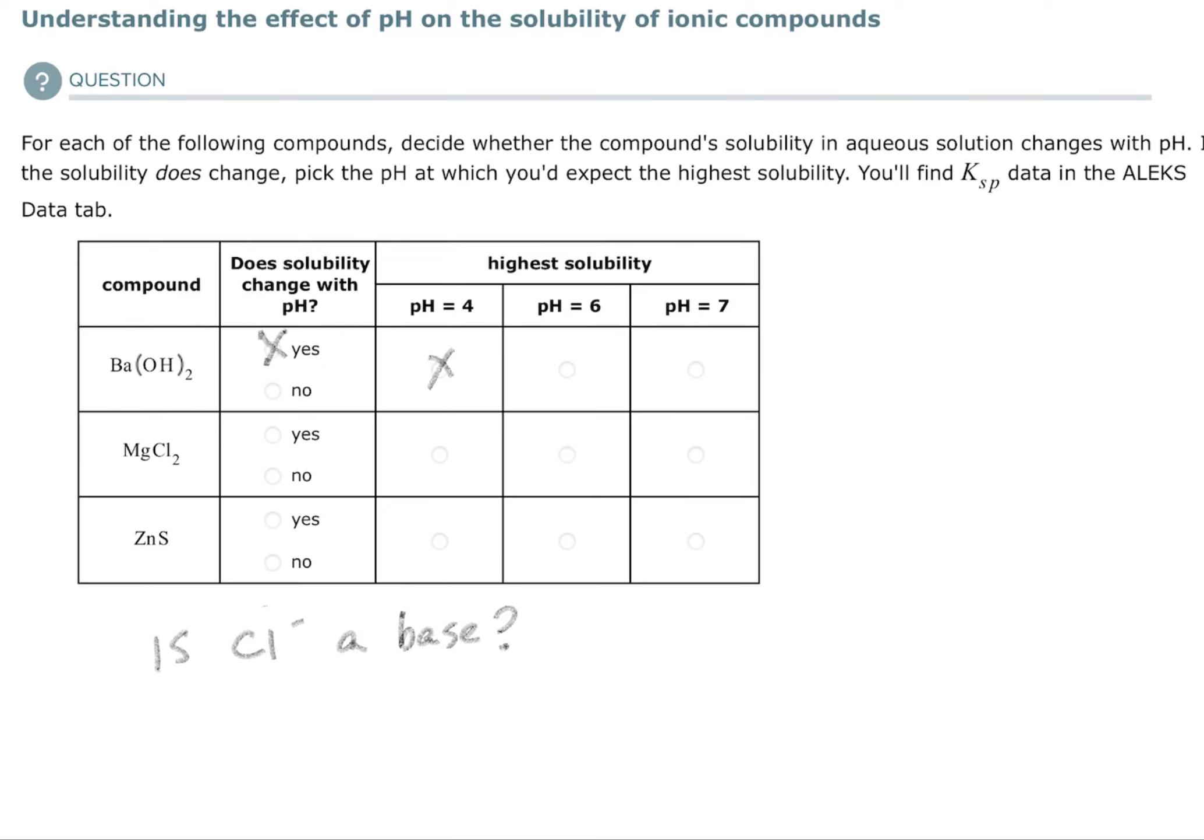So if the chloride ion were to be a base, then the higher the acidity, the more solubility. But since the chloride ion, if you were to add a hydrogen to it, HCl, that's a strong acid, and the conjugate base of a strong acid is not a base. So I'm just going to say nothing. There's nothing that happens there, so it does not change with solubility.